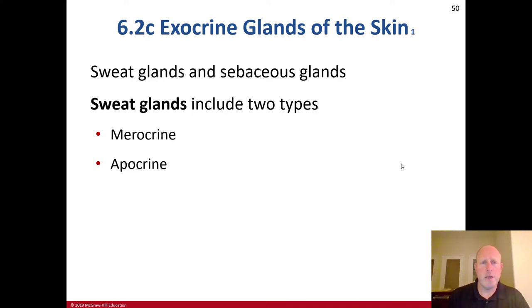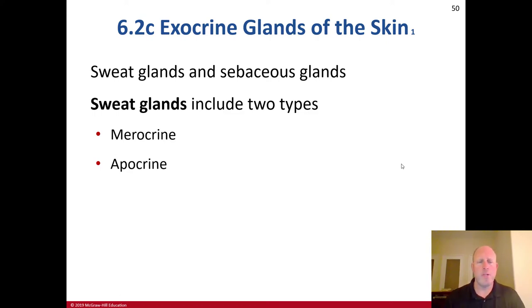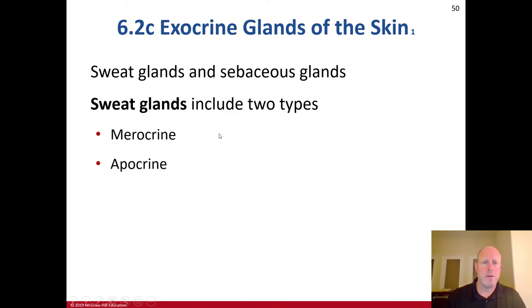We're now going to discuss for the integument, Section 2, Part C: the exocrine glands of the skin. We're talking about the sweat glands and sebaceous glands specifically. The sweat glands include two types: the merocrine and the apocrine glands.